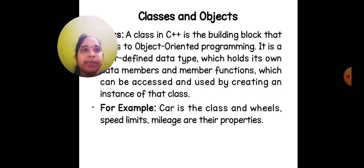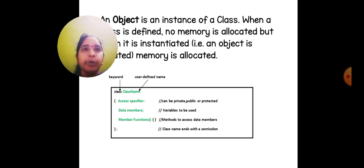Today we are going to see the concept of class and object. A class in C++ is the building block of Object-Oriented Programming. It is a predefined data type which holds its own data members and member functions, which can be accessed and used by creating an instance of that class. For example, car is the class and wheels, speed limits, mileage are their properties.